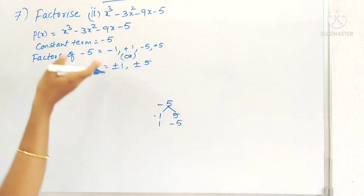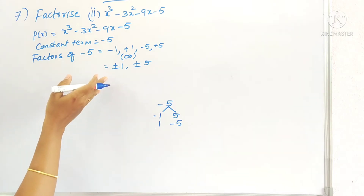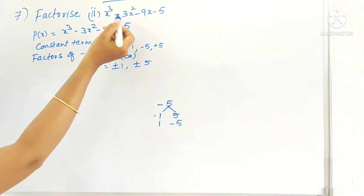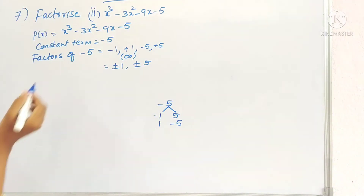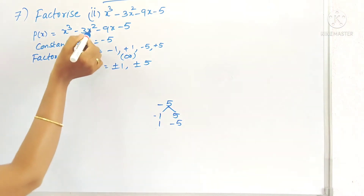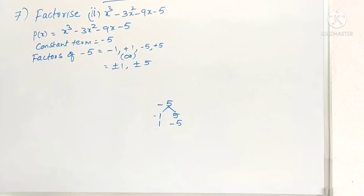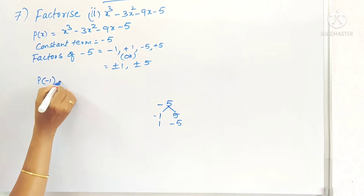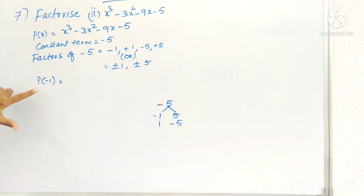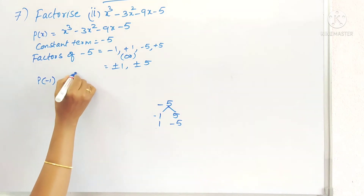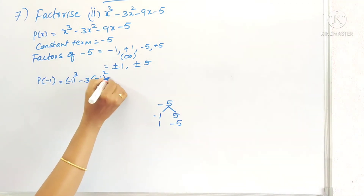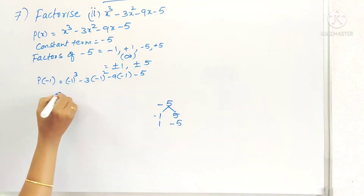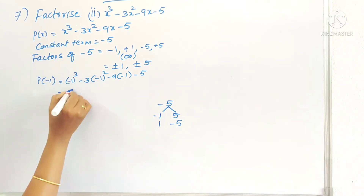Among the factors of 5, we have to check if any number is a factor of the given polynomial. For that, I am taking P of minus 1 and writing minus 1 in the place of x: minus 1 cube minus 3 into minus 1 whole square. The factor means we have to get the remainder 0.